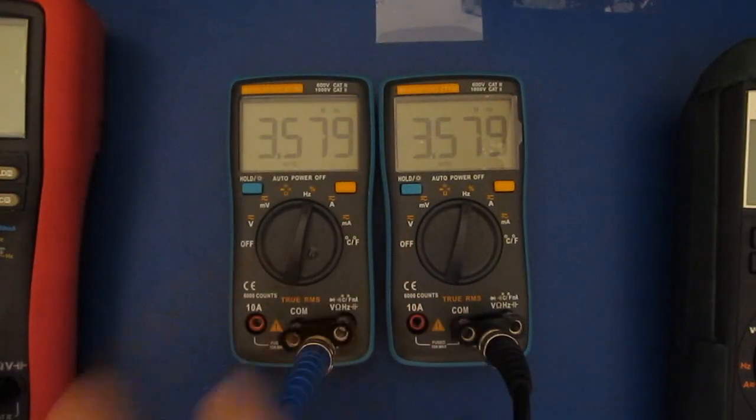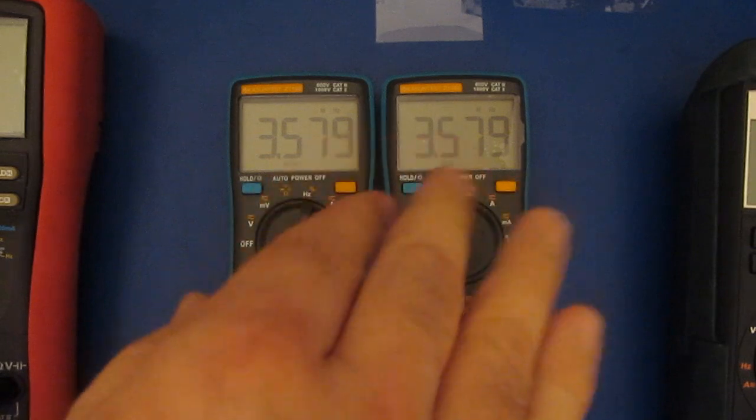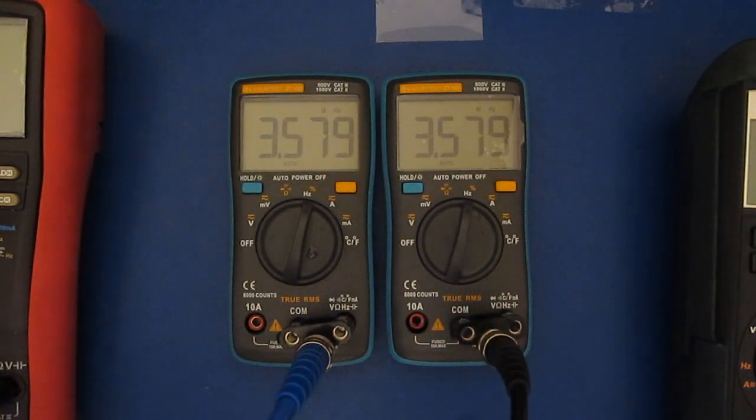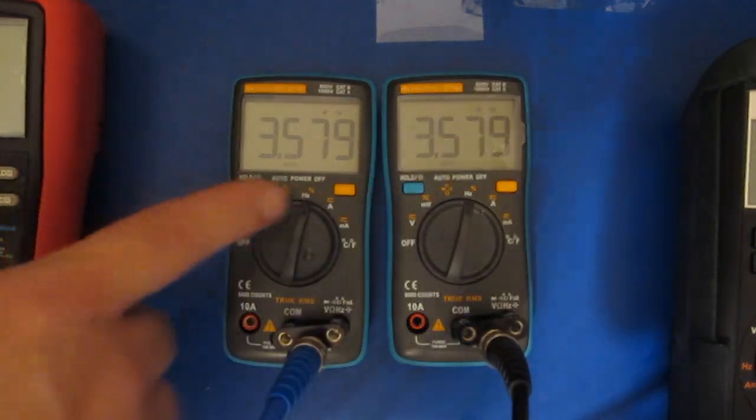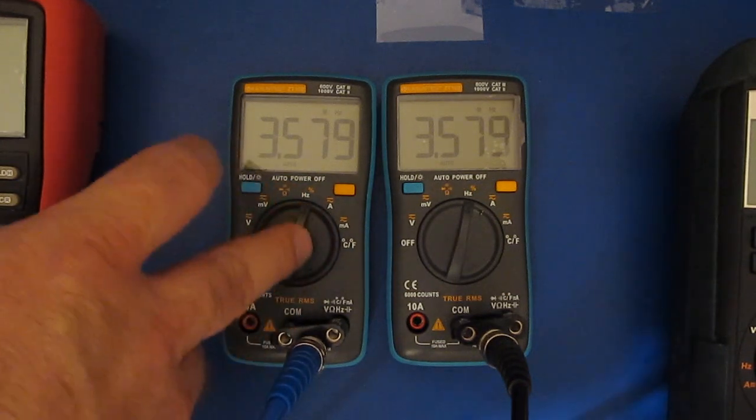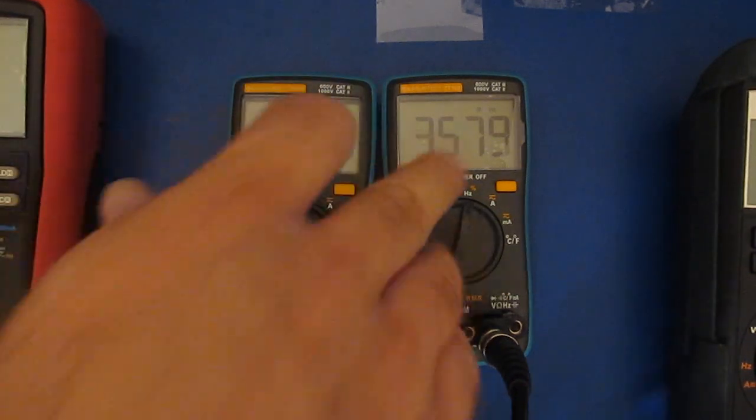All right so again this is the modified meter on the left. I've got these connected to my RF generator. These two are currently in parallel. Now I'd expect that this is no longer going to be able to run up to about 200 megahertz like this one would.